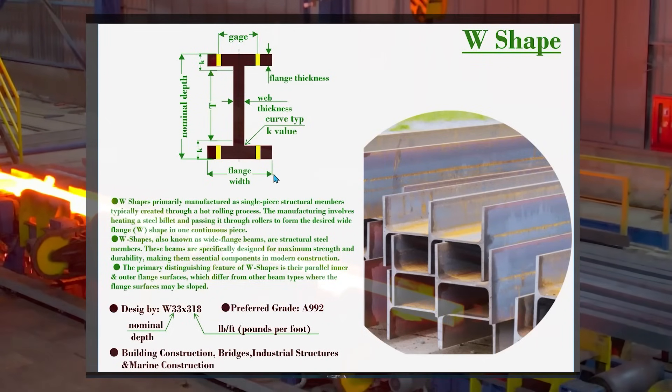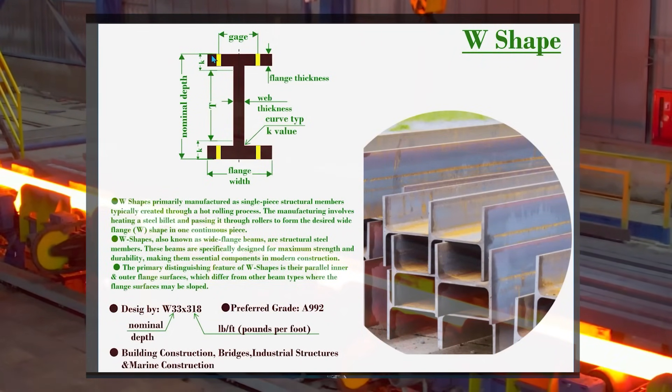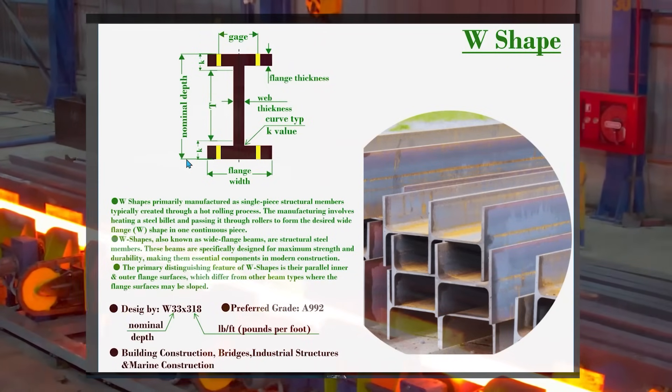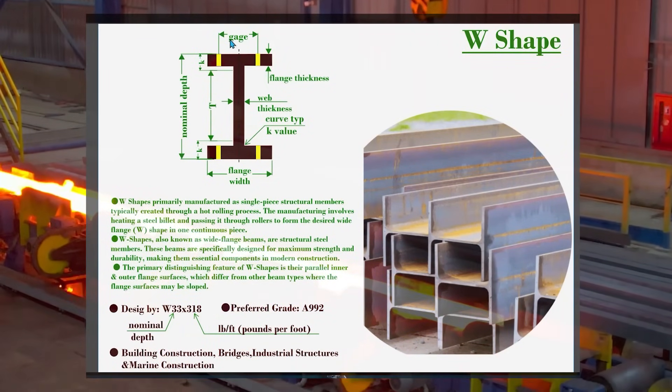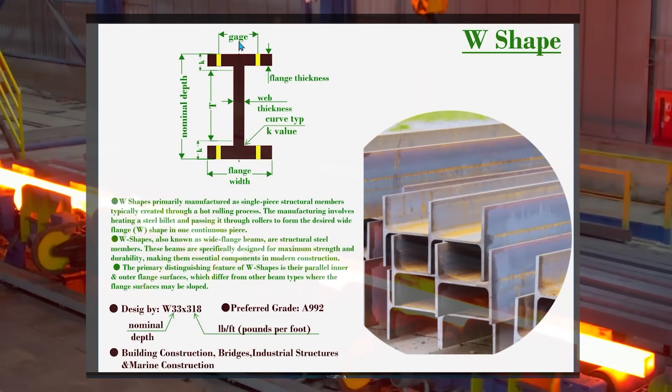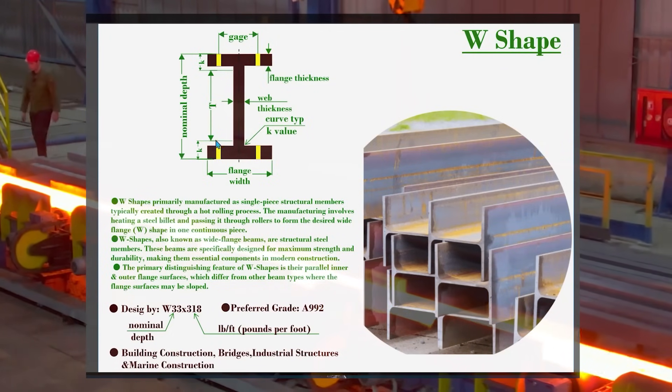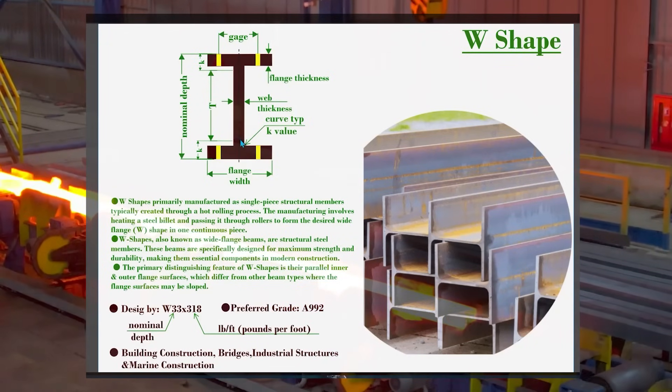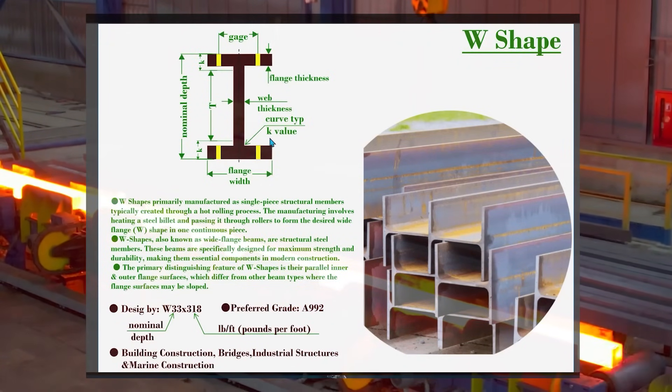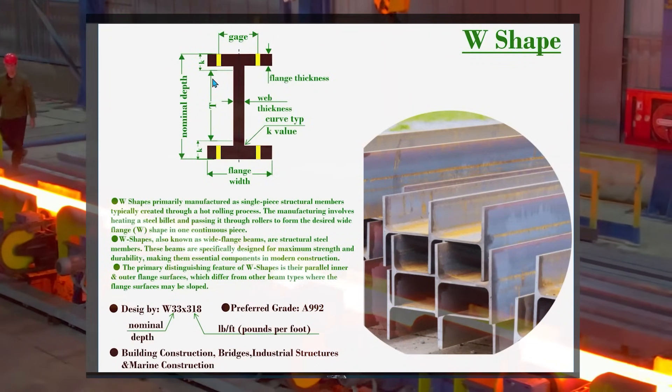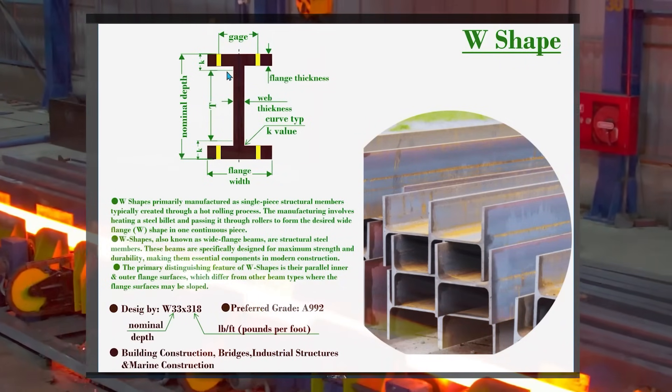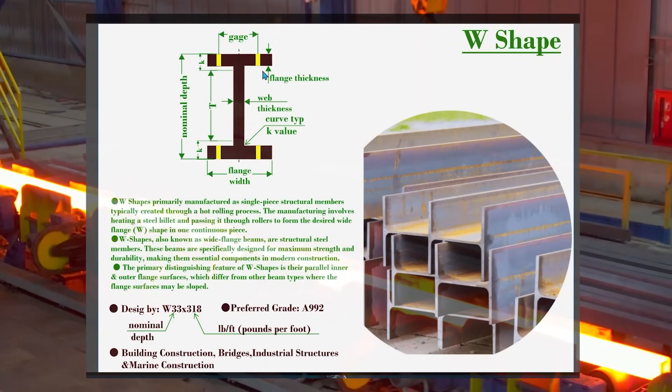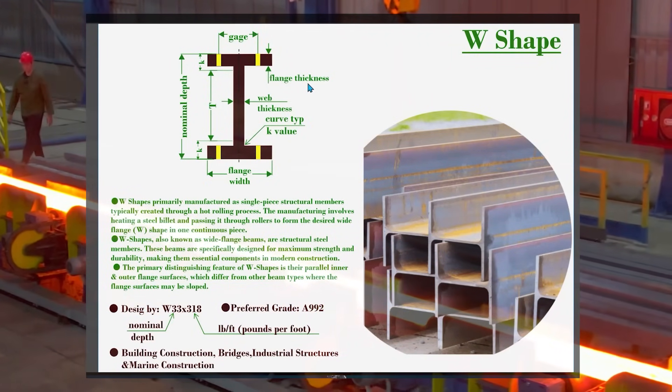Let's take a look at the figure here. This dimension is the flange width from top of flange to the bottom flange. This total dimension will be the nominal depth. This dimension gauge is used for bolting. Here there is a typical curve at these four locations, it is a K value. Excluding the K value, the remaining portion of the web is the T dimension. This is the web thickness. This dimension represents the flange thickness.